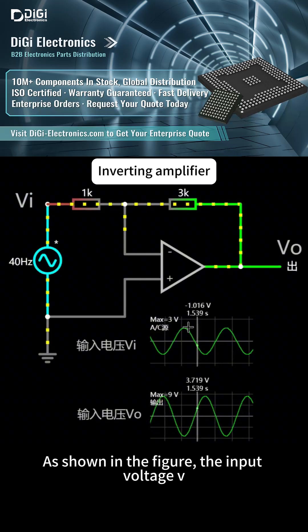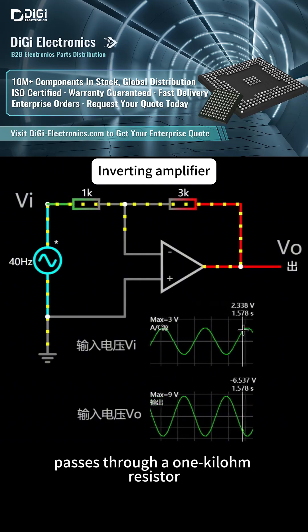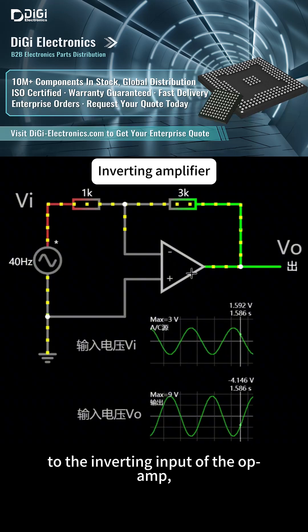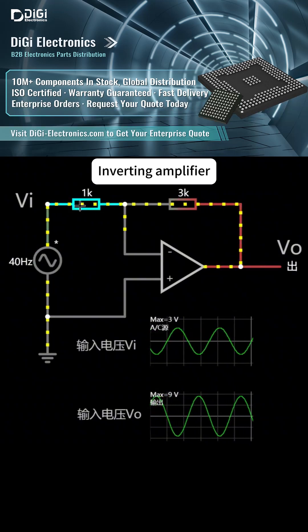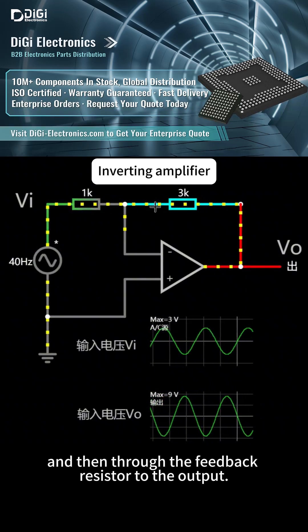the input voltage Vi passes through a 1 kilohm resistor to the inverting input of the op-amp, and then through the feedback resistor to the output.